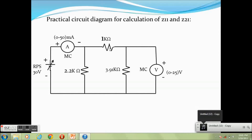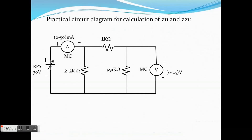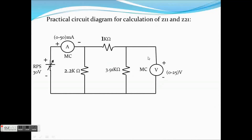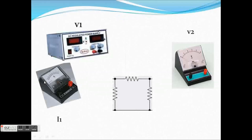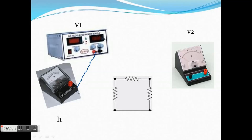The practical circuit diagram for calculation of Z11 and Z21 is shown. The apparatus required are an ammeter of range 0 to 50 mA, a voltmeter of range 0 to 25 volts, and a regulated power supply of 30 volts. Connect the positive terminal of RPS to the positive terminal of the ammeter and the negative terminal of the ammeter to node 1 of the pi network.